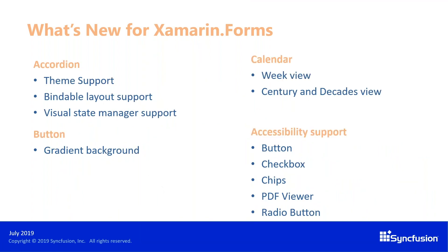The next set of features are from the accordion, which has enhancements this release — like theme support for dark and light themes, bindable layout support to generate content by binding to a collection of items, and visual state manager support to customize appearance based on visual states. The button control now has gradient color background support. Accessibility support has been added for controls like button, checkbox, chips, PDF viewer, and radio button. The calendar control now has week, century, and decades view.